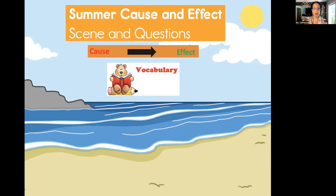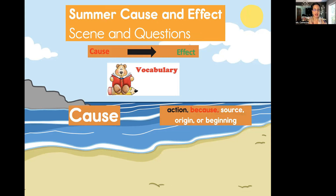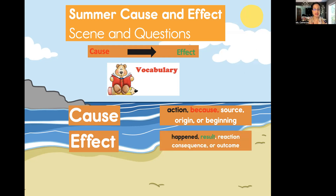Let's go over some vocabulary. Do you remember what cause means? A cause is an action. We use the words: because, source, origin, or beginning — those are synonyms. Do you remember what a synonym is? It is using another word. Now what about effect? What could the synonyms be for effect? Happened, result, reaction, consequence, or outcome.